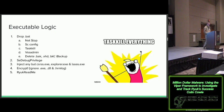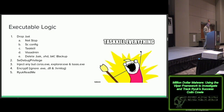Originally, Ryuk dropped a text file called ryukreadme.txt containing a Bitcoin address, an email address, and the typical message that your files are encrypted with no way to recover them except by contacting the attackers. After a couple of months, they switched to an .html file, removed all that content, and left only the email address and the word 'ryuk' in the middle — with no Bitcoin address.